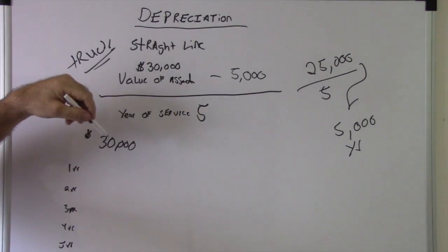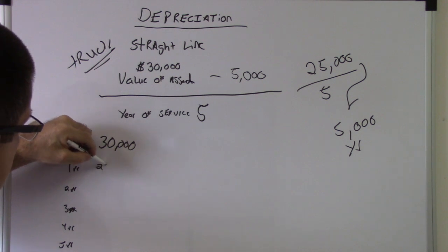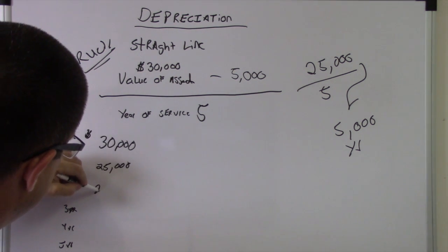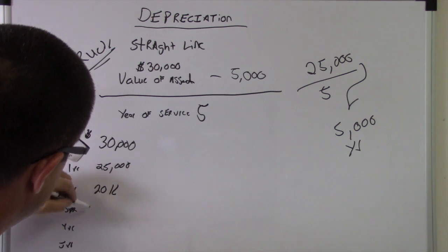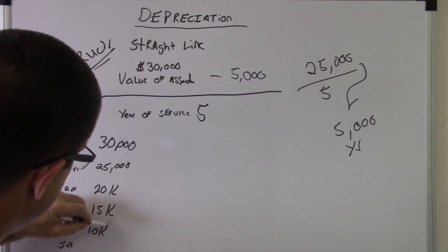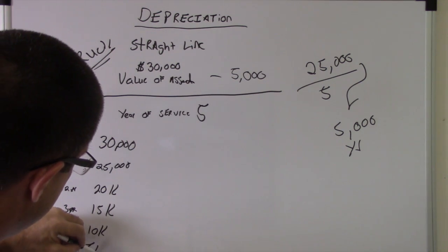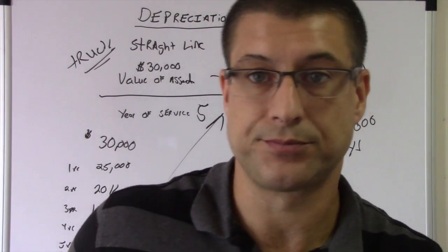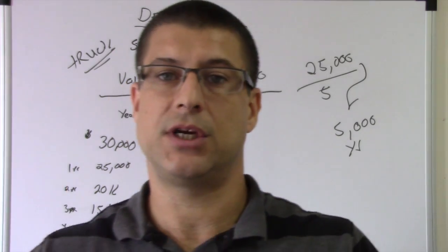So $30,000 you're starting with. After the first year, it's worth $25,000. After the second year, $20,000. Then $15,000, $10,000. After the fifth year, $5,000, because that's your salvage value. Anyways, that's depreciation.